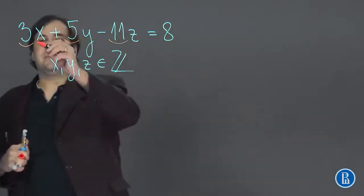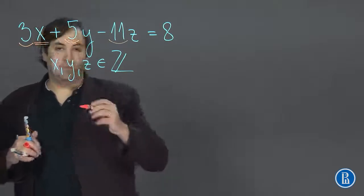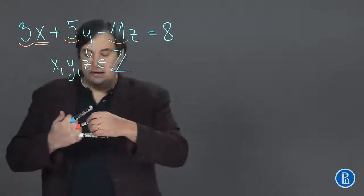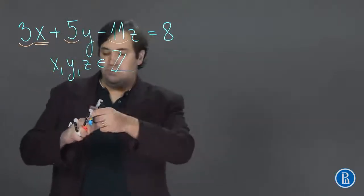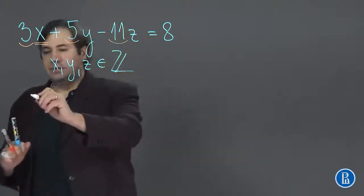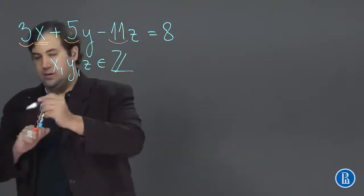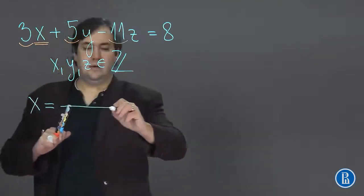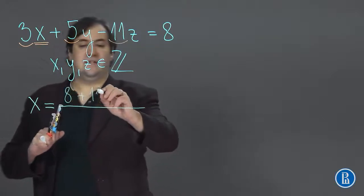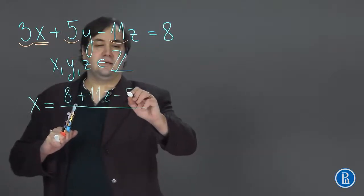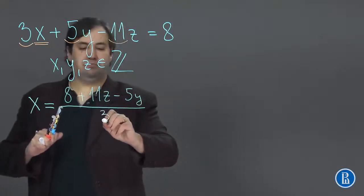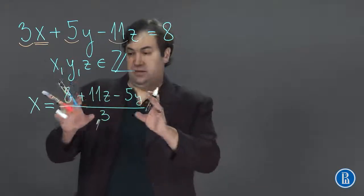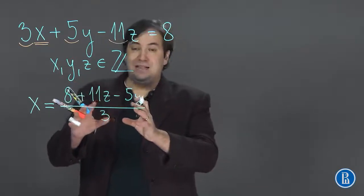This means that we should express the unknown, the variable which is beside this coefficient, via other unknowns. So x is equal to 8 plus 11z minus 5y over 3. And now separate the integer part of this fraction from its fractional part.